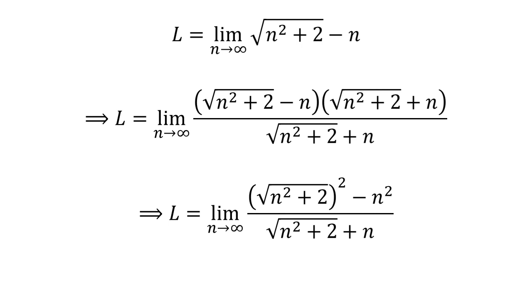In the above fraction, the numerator is in the form a minus b times a plus b. So we can write the numerator as the square of square root of n squared plus 2 minus n squared.